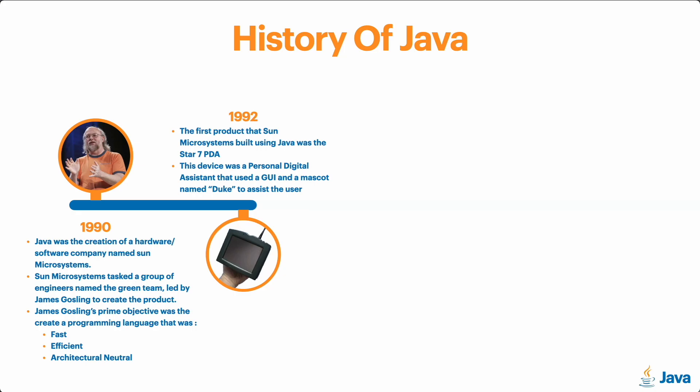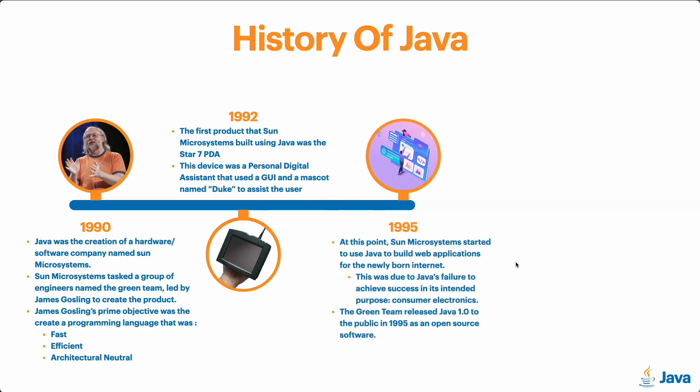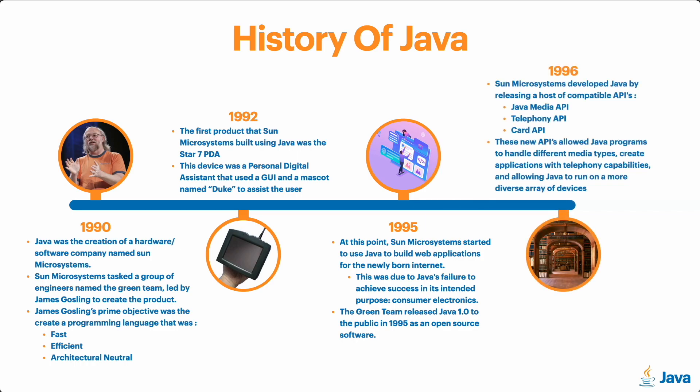The Green Team started thinking of different applications for Java, and in 1995 they found the perfect one: web development. Sun Microsystems started using Java to build web applications for the newly born internet. The internet was still very young at this time, so there weren't many programming languages that could be used to create apps — Java had a huge gap to fill. In 1995, the Green Team released Java 1.0, the first public and open-source version of Java. A year later, they also launched a bunch of APIs and libraries to help Java become an ultimate web development programming language.